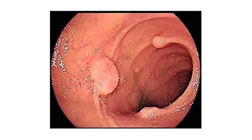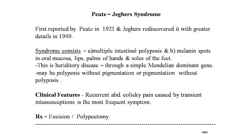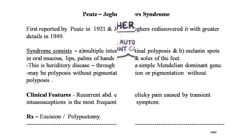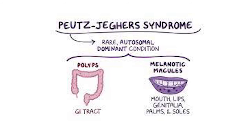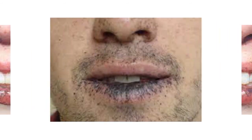You can watch the benign leiomyoma on your screen. Now, Peutz-Jeghers syndrome — first reported by Peutz in 1921, rediscovered with greater detail by Jeghers in 1949. It consists of multiple intestinal polyposis and melanin spots on the oral mucosa, lips, palms, hands, and soles of the feet. This is a hereditary disease transmitted through a simple Mendelian dominant gene. Clinical features: recurrent abdominal colic pain caused by transient intussusception is the most frequent symptom. Treatment is excision and polypectomy. The black spots on the lips and oral cavity are characteristic features.